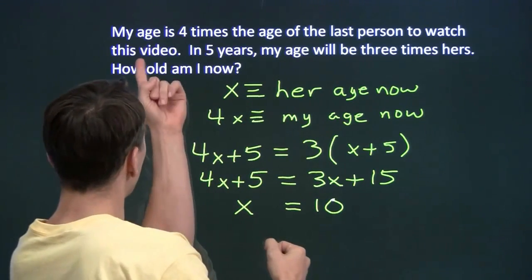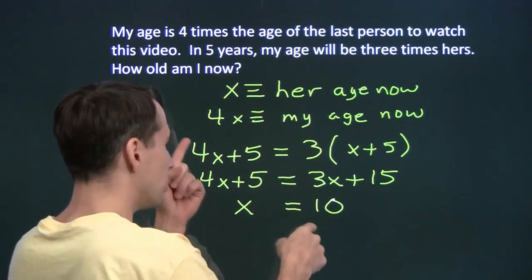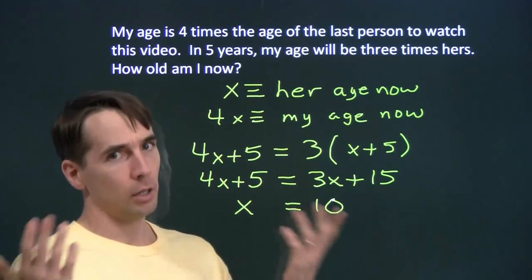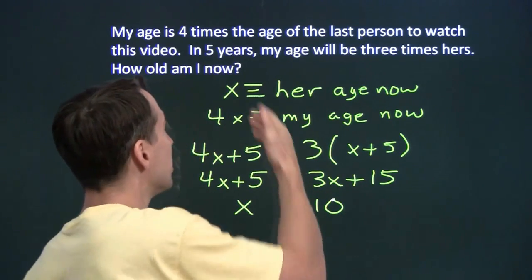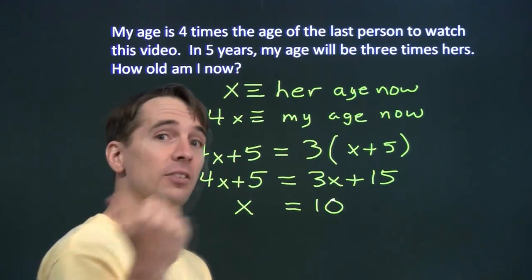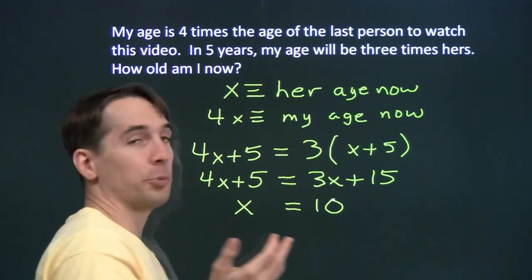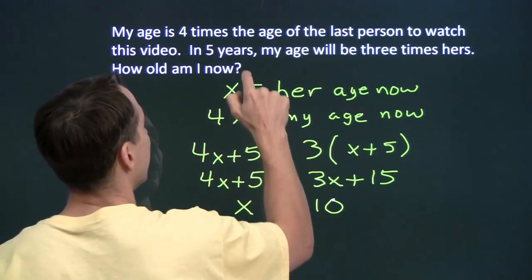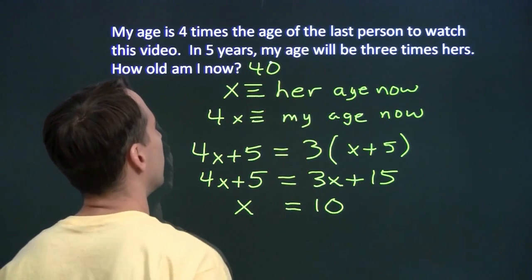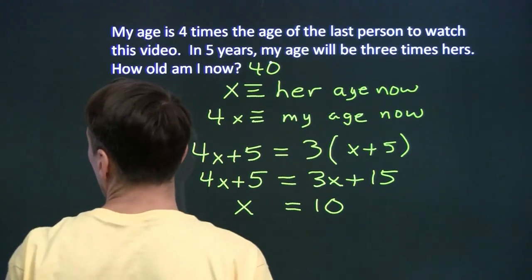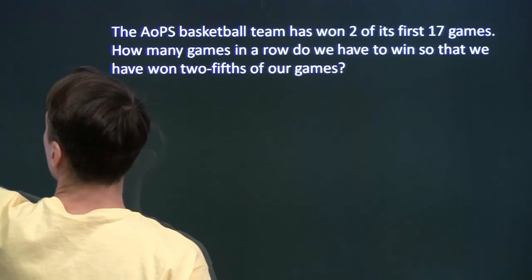Now we can check our answer. My age is 4 times her age. Sure enough, if I'm 40 and she's 10, I'm 4 times as old as she is. In five years, I'll be 45. She'll be 15. I'll be 3 times as old as she is then. So how old am I now? I'm 40.